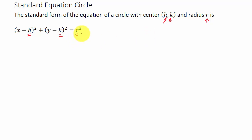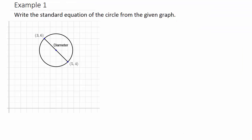Let's take a look at the example. Write the standard equation of the circle from the given graph. To find the equation, we need the coordinates for the center and the radius. They give us two points on the circle — if you connect these two points with a line, it's the diameter. You can see it goes through the center.